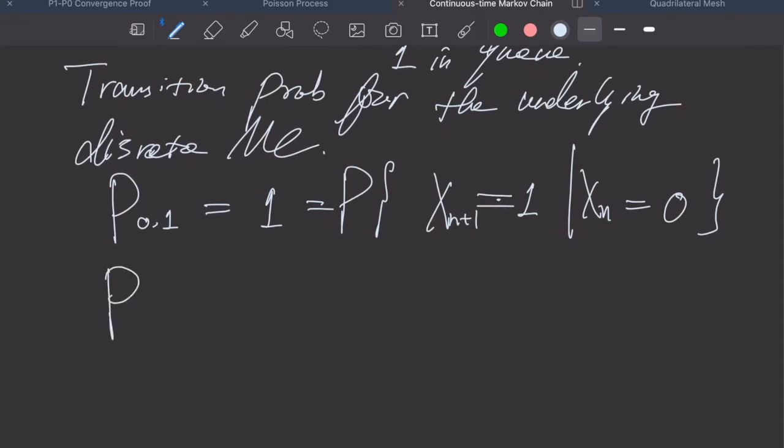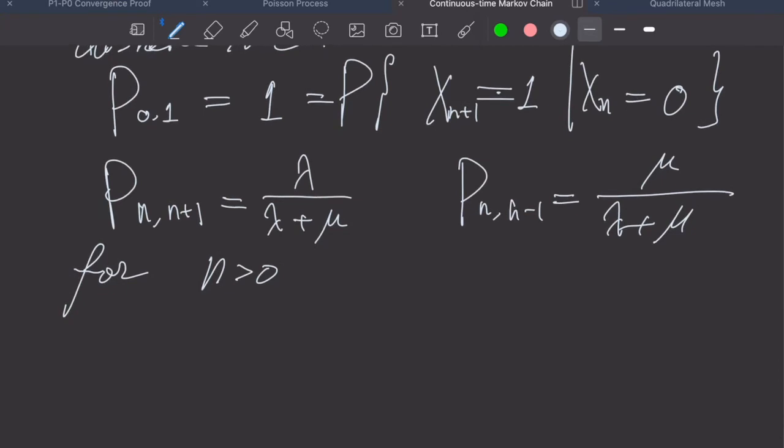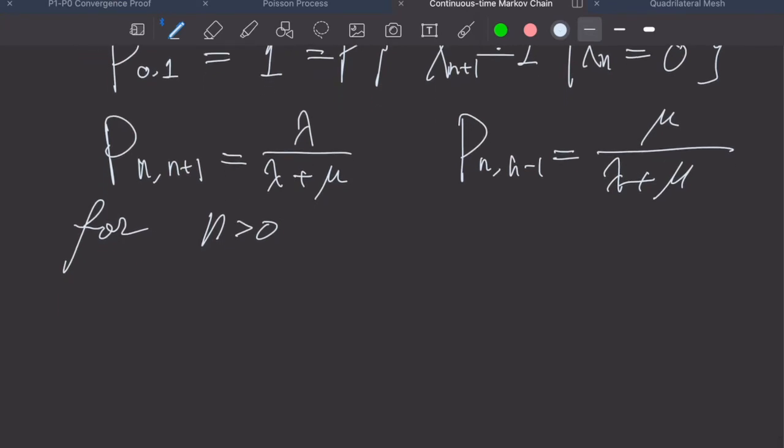Similarly, we can have P_n to n+1 is simply lambda divided by lambda plus mu, and P_n to n-1 is mu divided by lambda plus mu. This is just a plug in the formula we derived in previous video. Now we move on to the next one, which is what happens if we have a multi-server system.